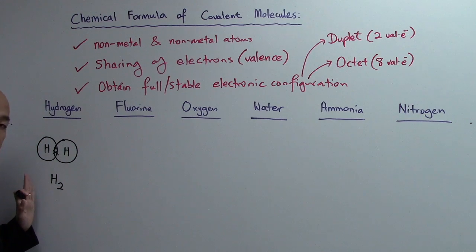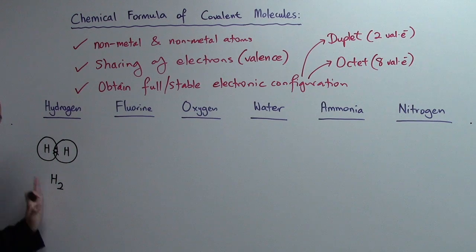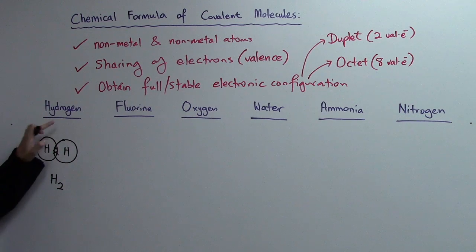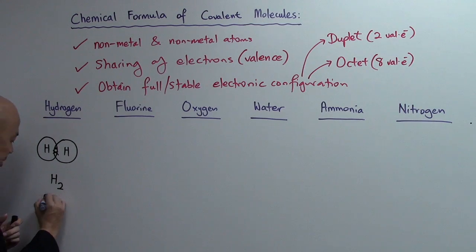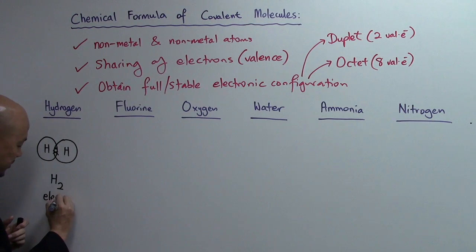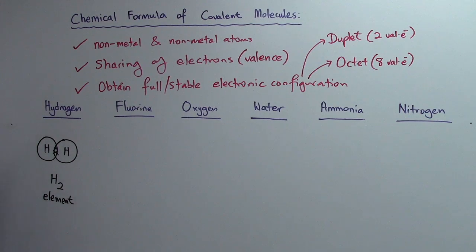It's really through the dot-and-cross diagram that we are able to come up with the formula of your covalent molecules. In this case, hydrogen H2 is an element.